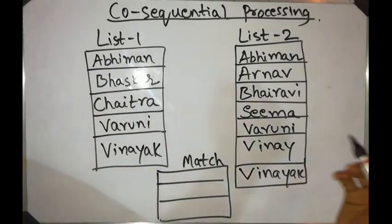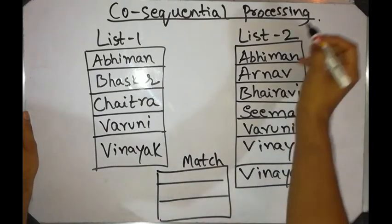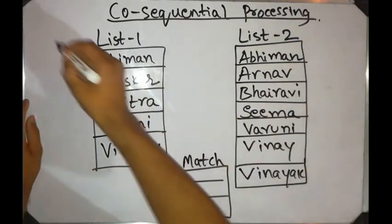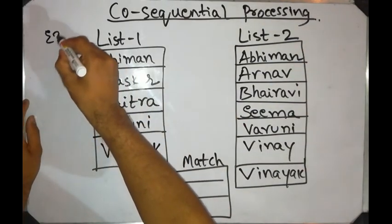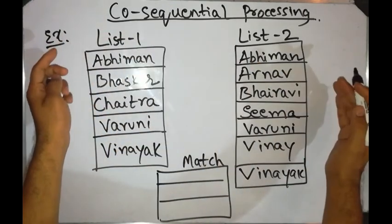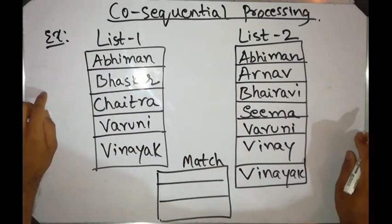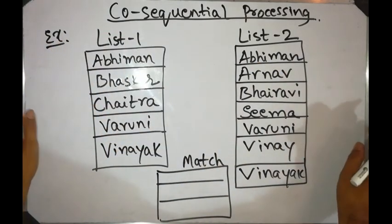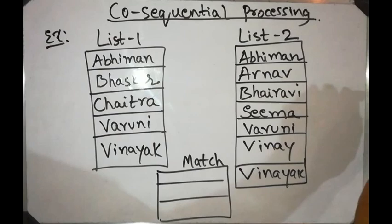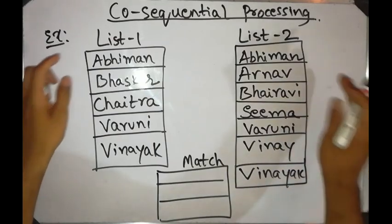Let's try to understand what co-sequential processing is. We'll take an example where we have two lists — not necessarily sorted, but if they are not sorted, we can sort them.